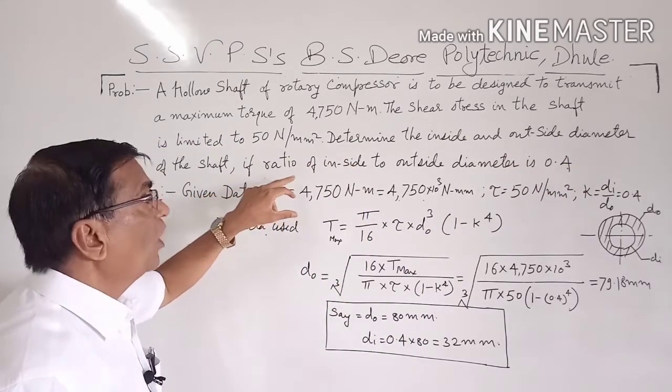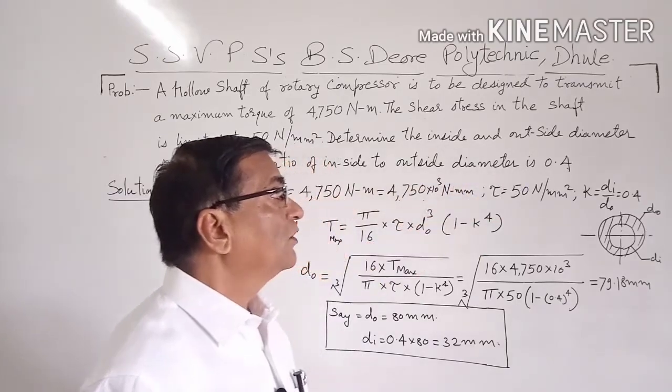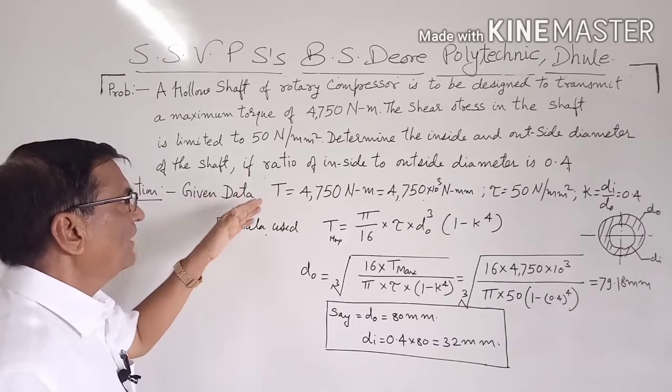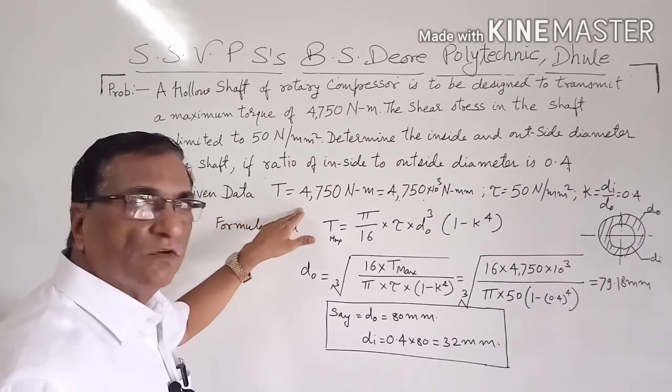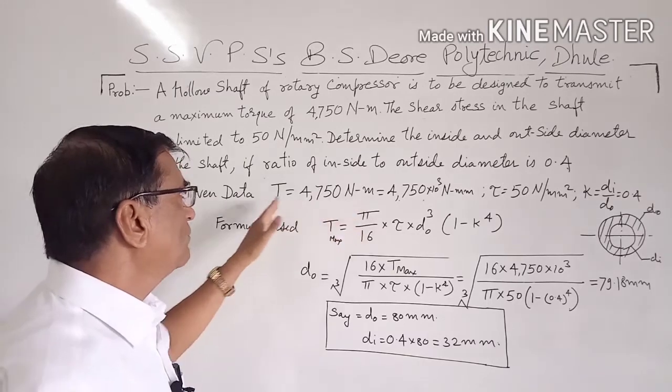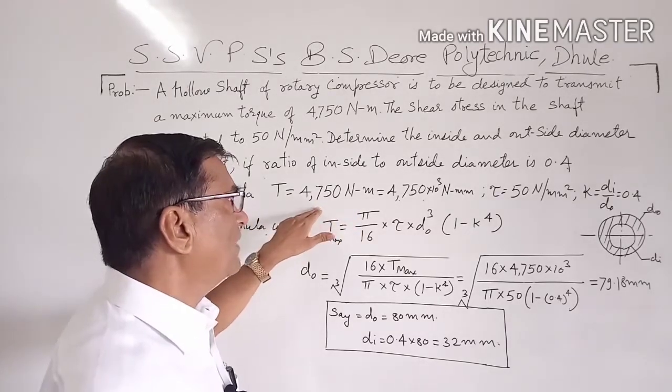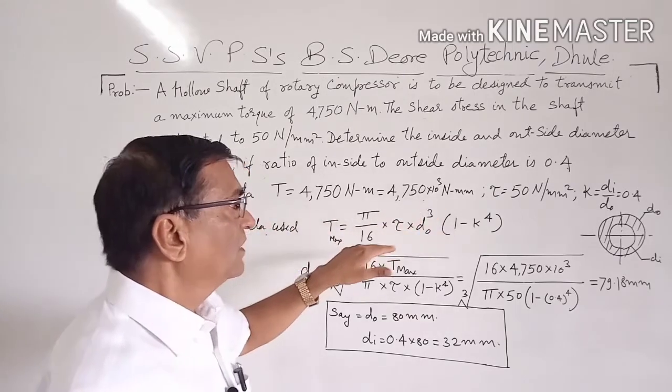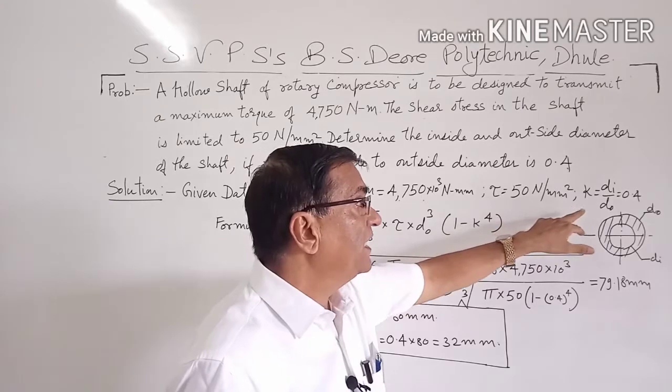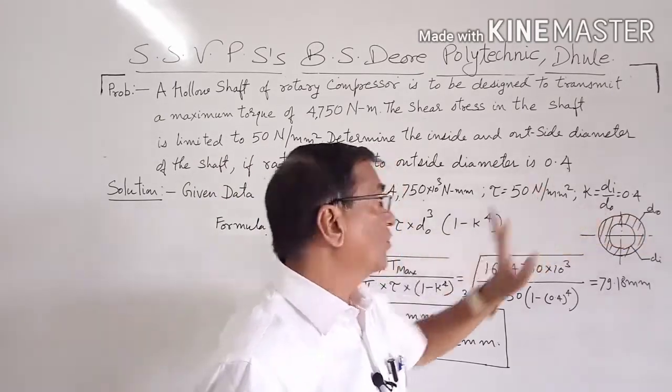If the ratio of inside to outside diameter is 0.4, we will start the problem with the data given. We have given torque equal to 4750 Newton-meters. We will convert this into Newton-millimeters by multiplying by 10 raised to 3. Tau is equal to 50 Newtons per millimeter squared, and K, the ratio of inside diameter to outside diameter, is 0.4.